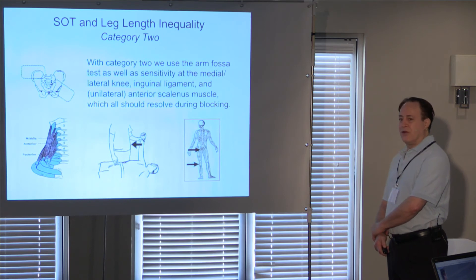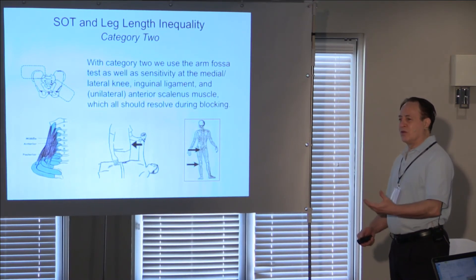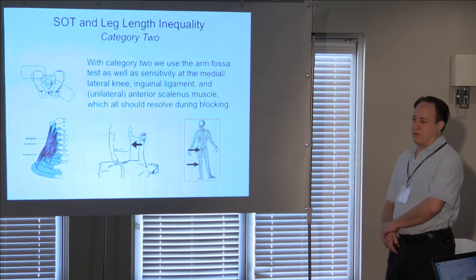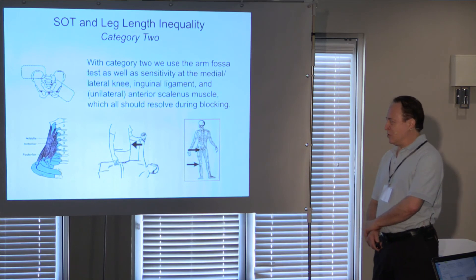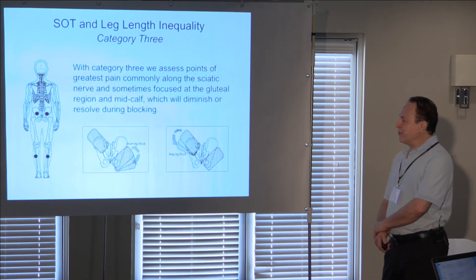Category two we look at things such as the arm fossa test, medial lateral knee and gluteal ligament sensitivity and even unilateral scalenous muscle tension which will all change as the patient's on the blocks. So if they're getting worse that would tell us maybe this patient does not have a functional leg length difference. Maybe it's anatomical. Maybe there's something else going on. And same thing with category three as we place the blocks and try to find a balance in reducing the pelvic torsion we should find the sciatica, any sort of tension with regards to in the gluteal area or mid-calf will diminish during blocking.